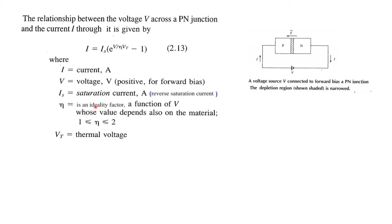Then we have an ideality factor η (eta), a function of V whose value depends on the material. Generally its value falls between 1 and 2, and we assume it to be fixed at 1. So the current depends on three parameters: the saturation current IS, the applied voltage V, and the thermal voltage VT.